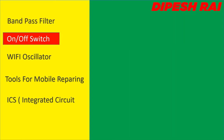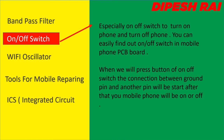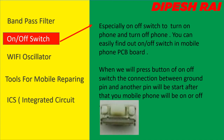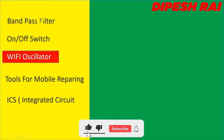Now we are discussing the on/off switch. The on/off switch is used to turn the phone on and turn it off. You can easily find the on/off switch in a mobile phone PCB board. When you press the on/off switch button, a connection between the ground pin and another pin will start, and after that your mobile phone will turn on or off. Now you can see the images of the on/off switch.